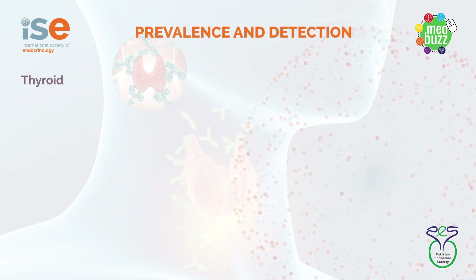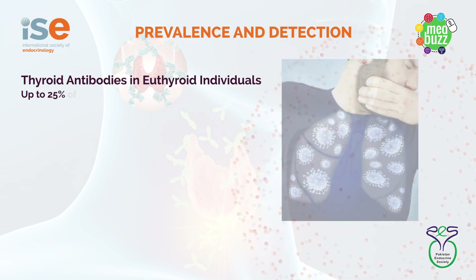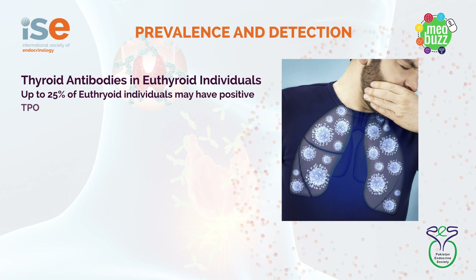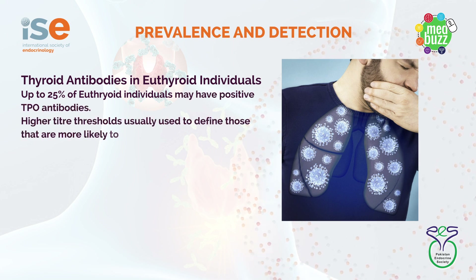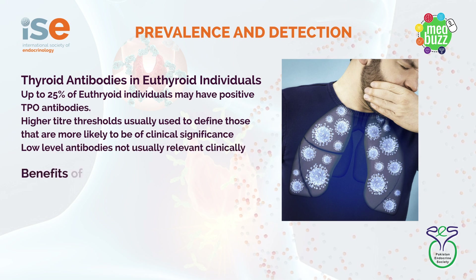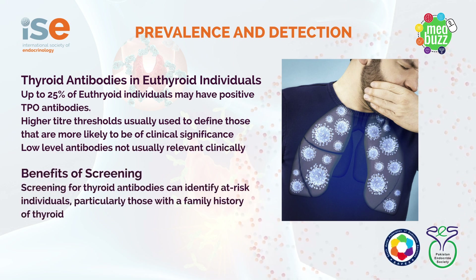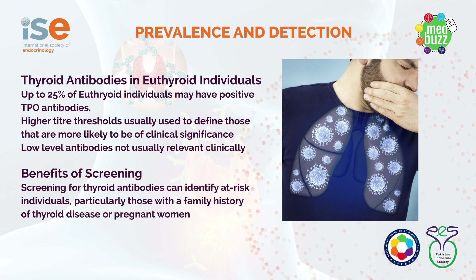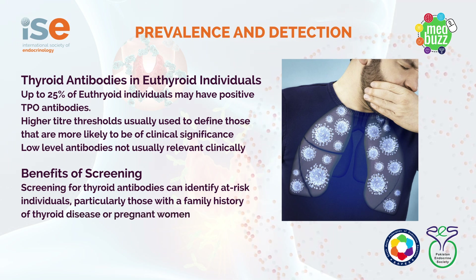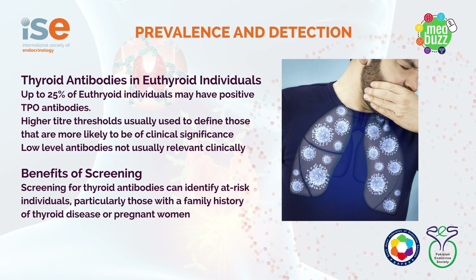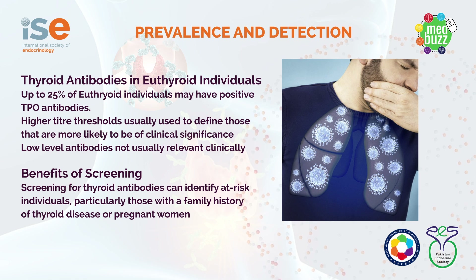So how prevalent are they in euthyroid individuals? Up to 25% of euthyroid individuals may have a positive thyroperoxidase antibody. That makes it more difficult to interpret sometimes, but higher levels of thyroperoxidase antibodies are usually used to define those that are more likely to be of clinical significance, and low level antibodies are not usually clinically relevant.